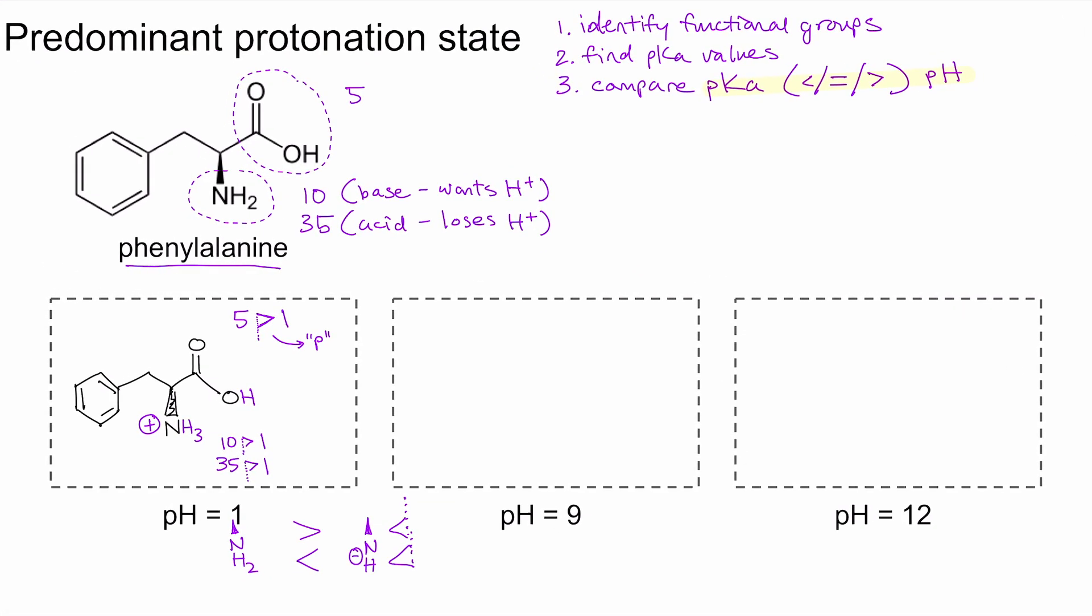So see if you can try out the boxes for pH 9 and pH 12. What are the predominant protonation states of phenylalanine for those? I'll show you the answer in 3, 2, 1. All right.